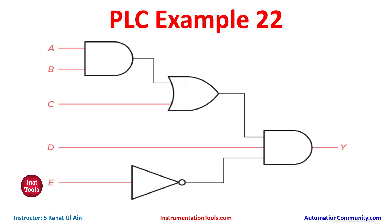There is an AND gate with inputs A and B. Then there is an OR gate with the output of AB and C. Then there is a NOT gate with input E. And then there is an AND gate with the output of AB plus C, and inputs D and E-NOT. We will use normally open contacts for inputs A, B, C and D, and normally closed contact for input E.